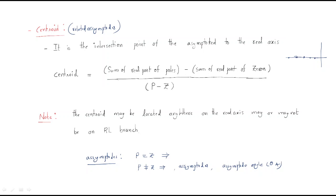The centroid is related to asymptotes. The centroid formula is: sum of real parts of poles minus sum of real parts of zeros, divided by number of poles minus number of zeros — that is (P minus Z). Here P represents number of poles and Z represents number of zeros. The centroid is generally represented by the symbol sigma. Note that poles sometimes have real and imaginary parts, but you keep only the real parts in this formula.